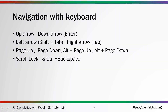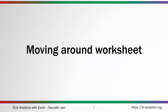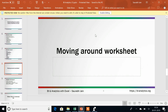To summarize navigation: up arrow, down arrow, left arrow (equivalent to Shift+Tab), right arrow (Tab), Page Up, Page Down, Alt+Page Up, Alt+Page Down, Scroll Lock, and Control+Backspace. That is how we can move around Excel. In coming lectures we will start with formulas, spreadsheet modeling, copy-paste, formatting, and other editing options. Hope you are enjoying the course — happy learning, thank you!